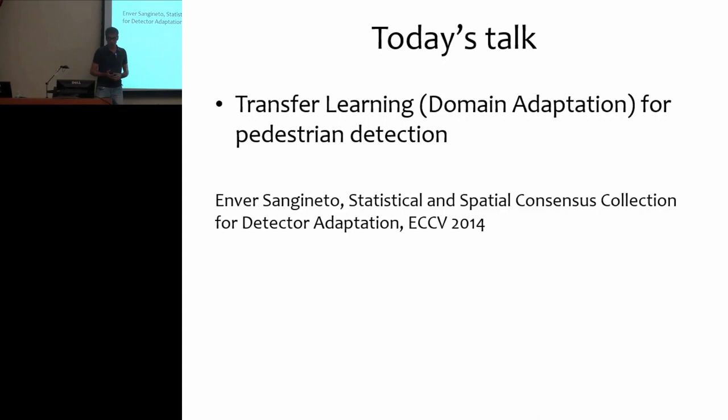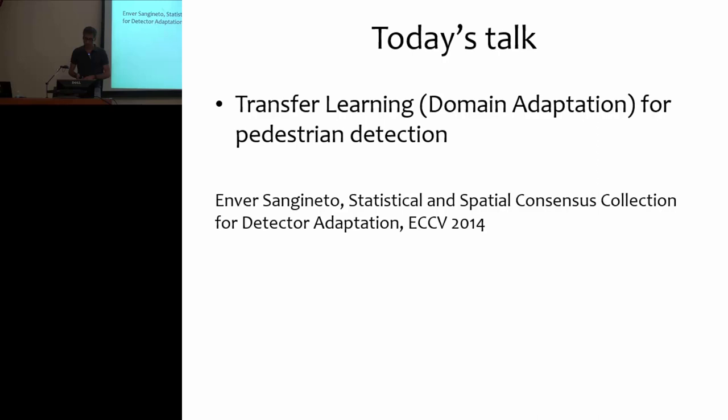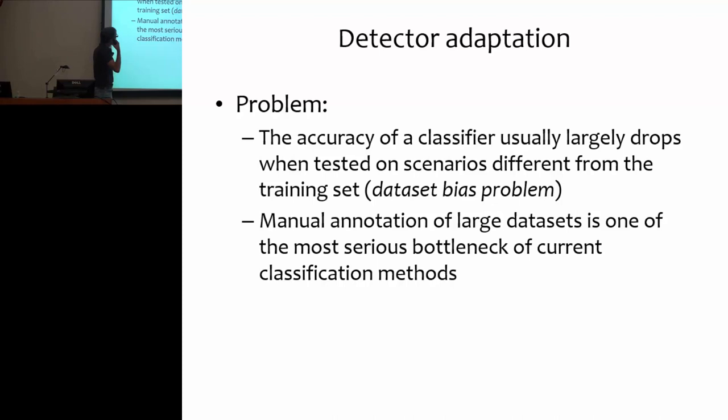The talk of today concerns transfer learning, more specifically domain adaptation for pedestrian detection. It's a paper which has been accepted at the next ECCV.